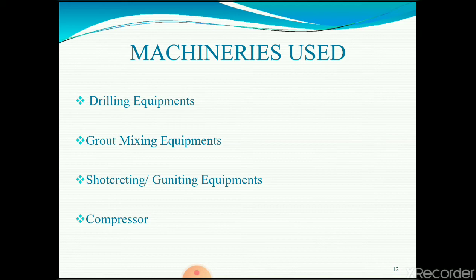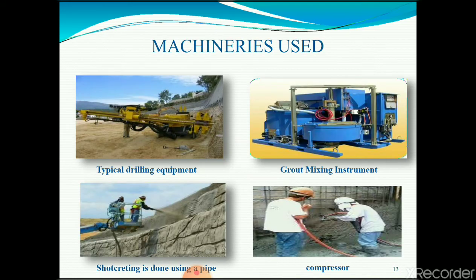To recap the machinery used: first is drilling equipment, second is grout mixing equipment, third is shotcrete or gunite equipment, and lastly the compressor. The drilling equipment is shown in the first picture; the grout mixing equipment is the second unit. Shotcrete is done using a pipe for mass concreting. The compressor compresses air to maintain fluidity of the concrete, which is placed with force so it sticks to the wall and provides large strength.